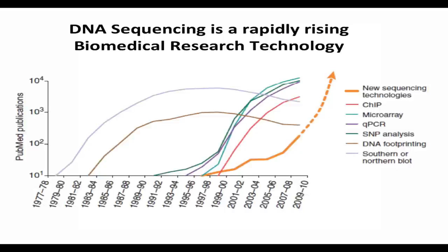As a result, publications making use of or emphasizing applications or data analysis algorithms for next-gen technology are the biggest growth area in PubMed — across all sciences, but very strongly dominating biology. Microarrays have plateaued, qPCR is at steady state, Southern and Northern blots have already started to drop off. New sequencing technologies are really where it's at. As more people use it, more data is generated, and more people shift their research emphasis to informatics methods to deal with new problems or technology variants that require informatics solutions.